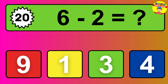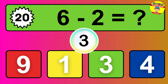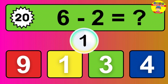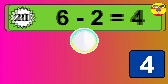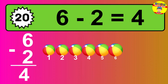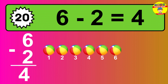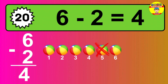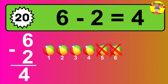Question 20: 6 minus 2 equals what? The answer is 6 minus 2 is 4. Let's count it: 1, 2, 3, 4.